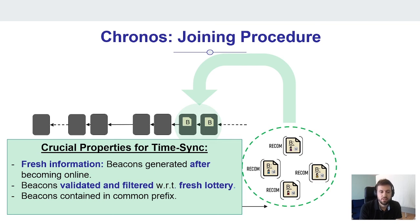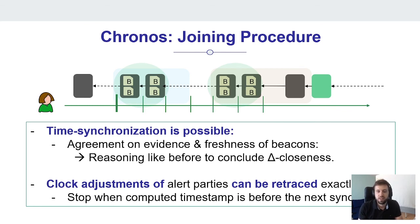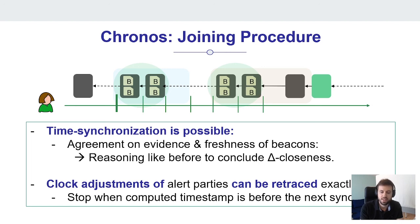The beacons also have to be in the common prefix such that everybody does the computation based on the same base set of values. Time synchronization is then possible for Alice because we have agreement on evidence and freshness of beacons. We can apply the same reasoning from the earlier example to conclude delta closeness — because as we noted, in order to compute the value and conclude delta closeness, we don't need Alice's initial clock to be in any way close to the alert parties' clocks. It can be way off and she will jump directly into the interval close to all alert parties. Clock adjustments can be retraced exactly.